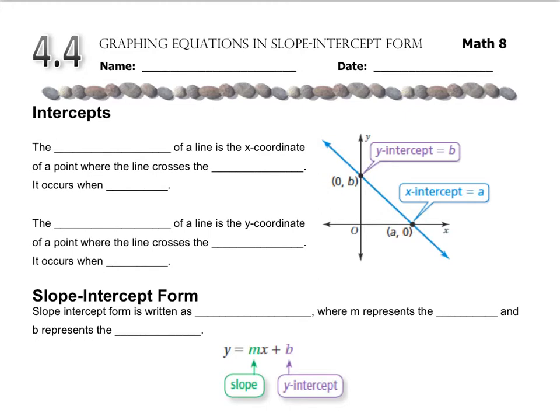Let's fill in some blanks. The x-intercept of a line is the x-coordinate of a point where the line crosses the x-axis, and it occurs when the y-value is zero. If you look at the spot over here, the x-intercept has a y-value of zero, and that's true all the time.